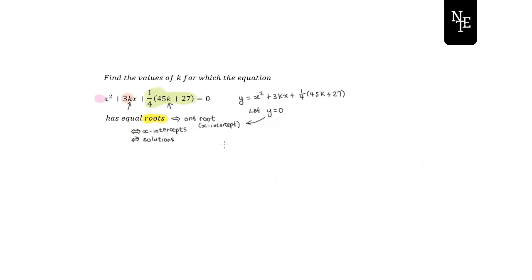One of the tools we have for factorization is the quadratic formula, where x equals minus b plus or minus the square root of b squared minus 4ac, divided by 2a. The important thing from this formula is the expression underneath — highlighted in blue — which is called the discriminant. The discriminant is what tells us what type of x-intercepts we are going to have: two x-intercepts, one x-intercept, or none at all. This part, b squared minus 4ac, is the discriminant.